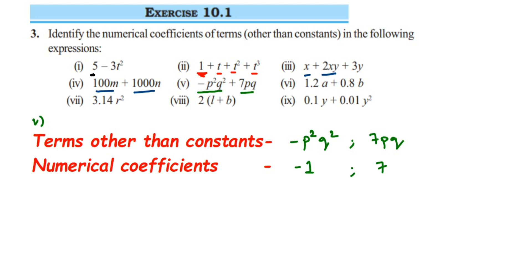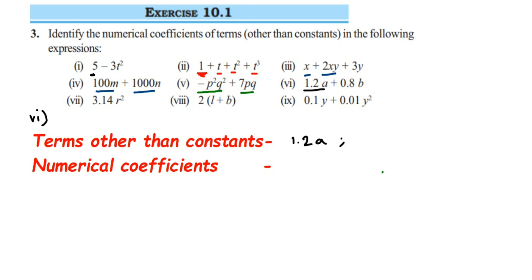Sixth question: we have 1.2a and 0.8b. Two terms are present: 1.2a and 0.8b. For the first term, the numerical coefficient is 1.2 — it's a decimal number but it can still be a coefficient. For the second term, it is 0.8.